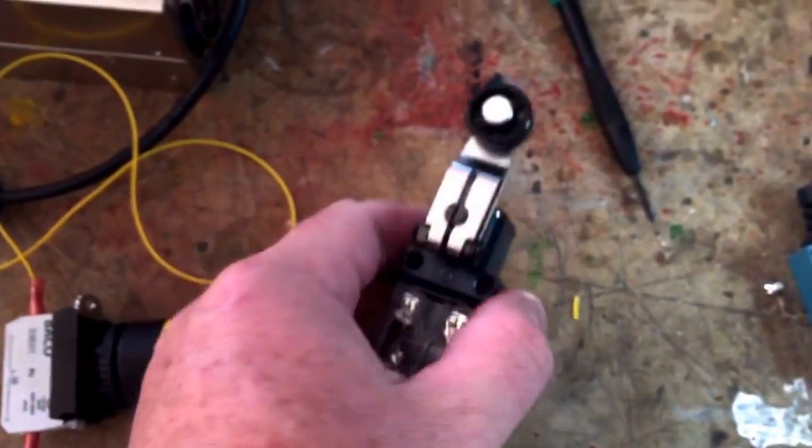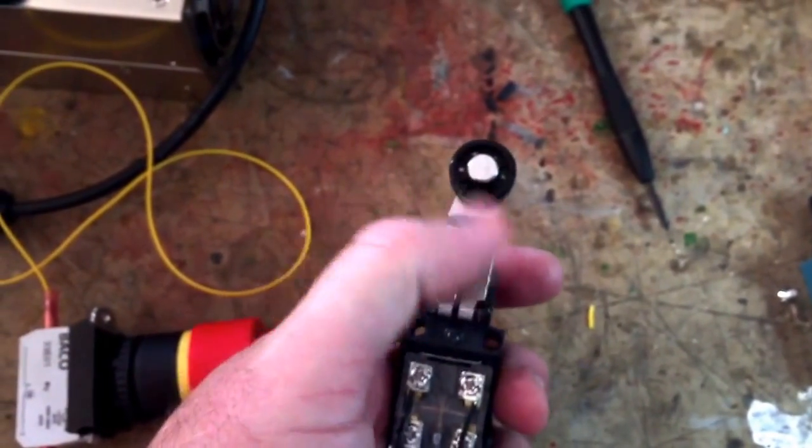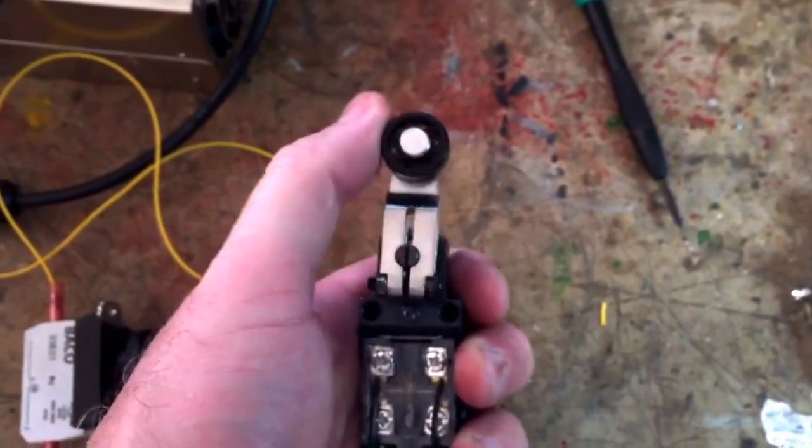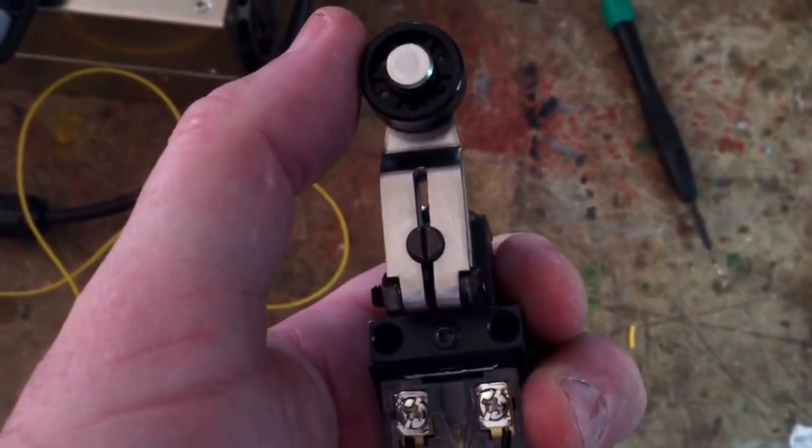And then the way the limit switch works is you can adjust the angle of this wheel around the spindle. And if you can hear it, that's the switch.